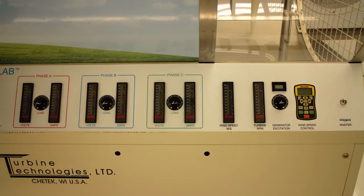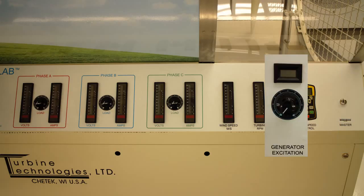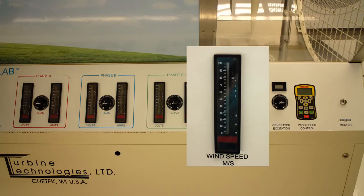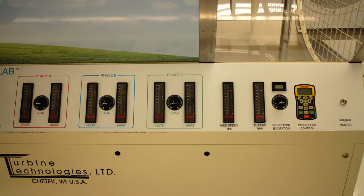The operator panel of the wind turbine consists of a master power switch, a wind speed master controller, a generator excitation controller, a wind turbine RPM display, a wind speed display, and voltage and amperage display for phase A, B, and C.